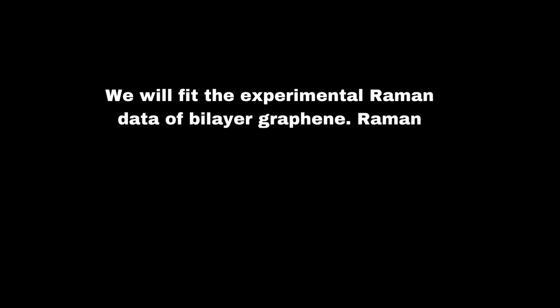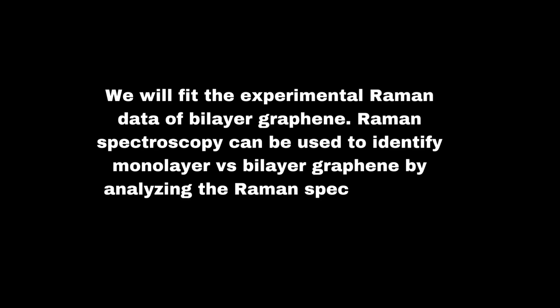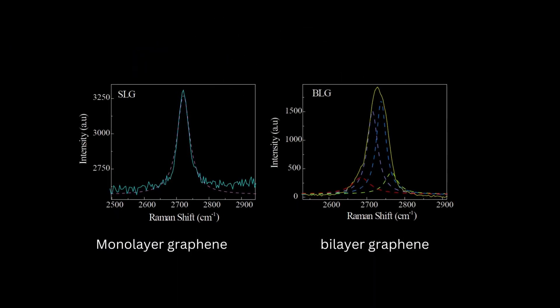Raman spectroscopy can be used to identify monolayer versus bilayer graphene by analyzing the Raman spectra of the samples. Graphene is a two-dimensional material consisting of a single layer of carbon atoms arranged in a hexagonal lattice. In bilayer graphene, two layers of graphene are stacked on top of each other. The Raman spectra of graphene and bilayer graphene show distinct differences that can be used to distinguish between the two.